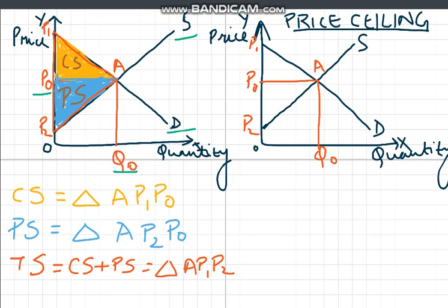Now again, if our price ceiling is exactly at price P0, it will not affect our equilibrium, as equilibrium will still be at price P0 and quantity Q0 at point A. Again, if our price ceiling is above P0, it will not affect our consumer and producer surplus, because the equilibrium at A can still be reached. But in the case where our price ceiling is less than P0, we cannot reach our equilibrium level at A. So let's consider: does this case lead to deadweight loss?